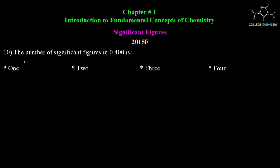Question number 10: the number of significant figures in 0.400. Since a decimal point is present, we consider left to right from the first non-zero digit. The answer is 3 significant figures.